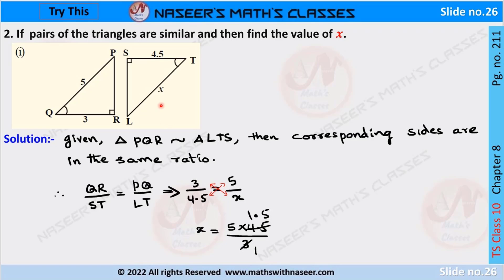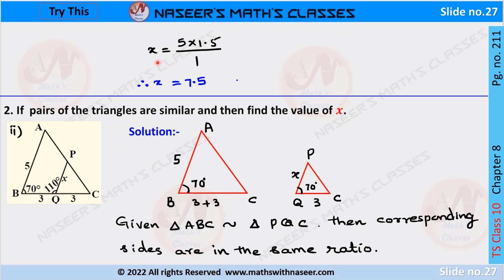Now we substitute the values from the given figure. We can write it as 3 by 4.5 is equal to 5 by x. Now we cross multiply, then we write x is equal to 5 into 4.5 by 3. We cancel 3 into 1.5s are 4.5, so x is equal to 5 into 1.5 by 1. After multiplication we get x is equal to 7.5.